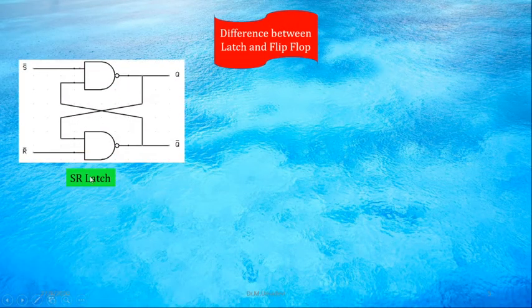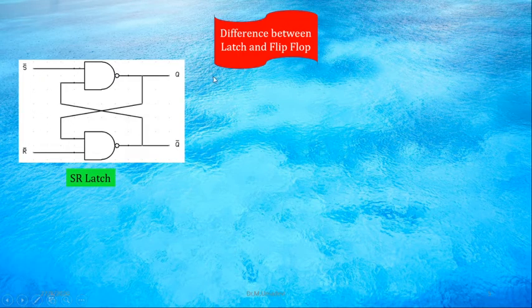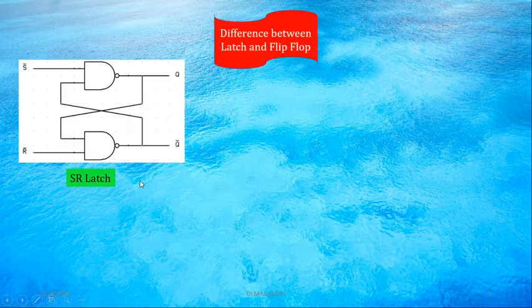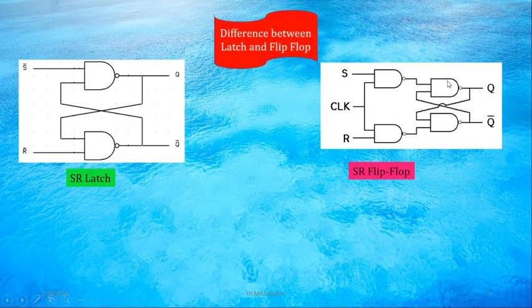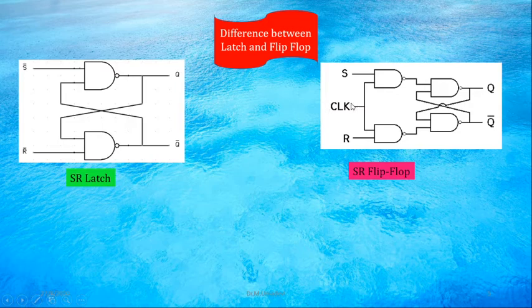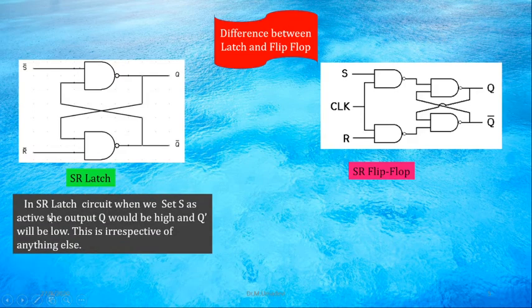I will explain with a circuit. This is an SR latch. Here S-bar and R-bar are the inputs and Q, Q-dash are the outputs. Instead of S-bar and R-bar you can write S and R also. SR latch does not use any clock. In SR flip-flop, it is constructed using NAND gates where S and R are the inputs and Q, Q-bar are the outputs, and here we have connected a clock. In the SR latch circuit, when S is active, the output Q would be high and Q-dash will be low.